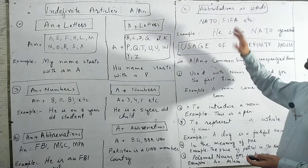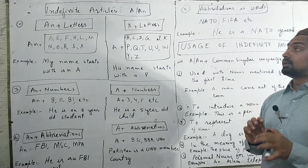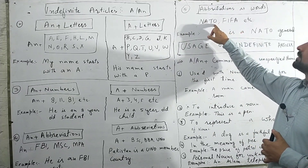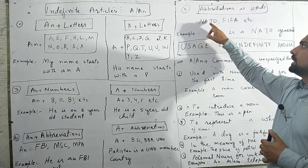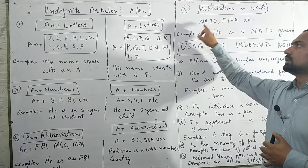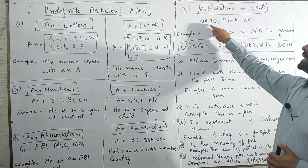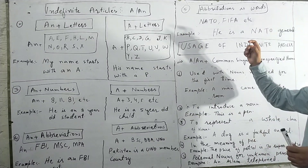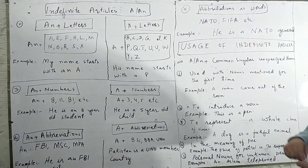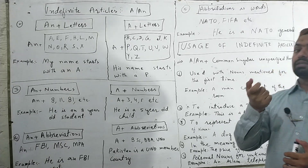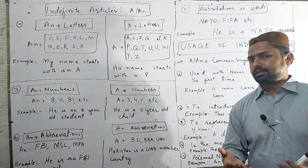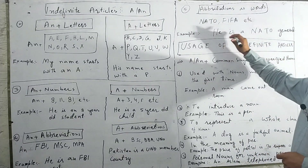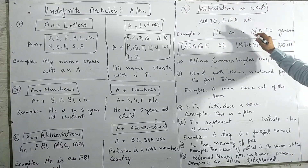Similarly, for abbreviations that are pronounced as complete words — like NATO and FIFA — we look at the pronunciation. If the pronunciation starts with a vowel sound, use AN; if consonant, use A. For example: he is A NATO general, because NATO starts with the consonant sound N.